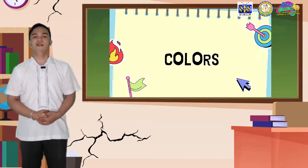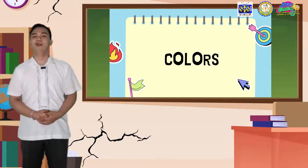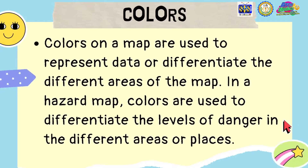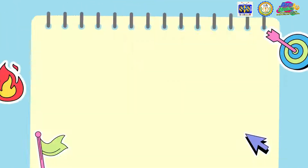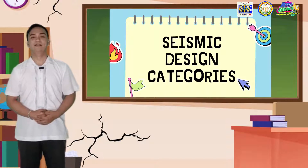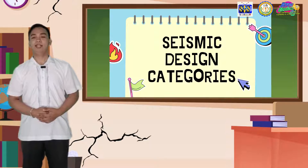The next component is colors. Colors on a map are used to represent data or differentiate the different areas of the map. In a hazard map, colors are used to differentiate the levels of danger in different areas or places. We have here different colors used to represent the Seismic Design Category or SDC. Seismic Design Categories are the categories of how hazardous an earthquake is. It is represented by seven colors.